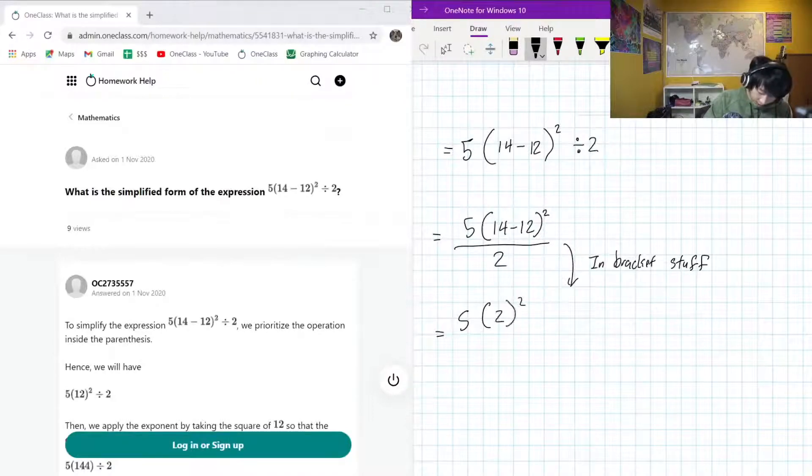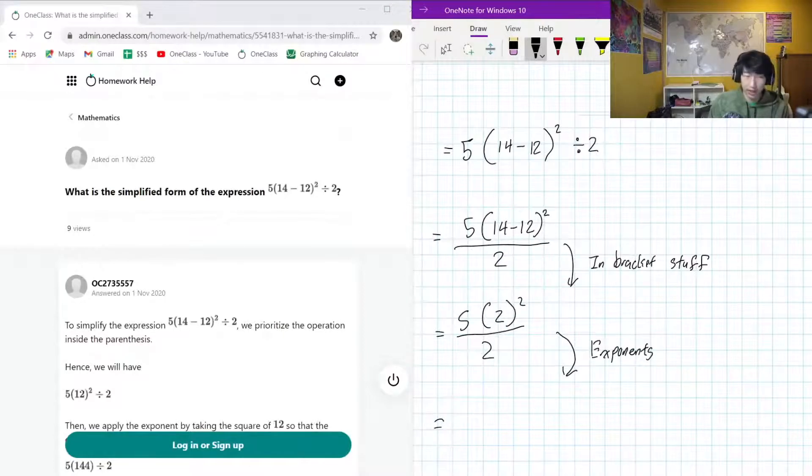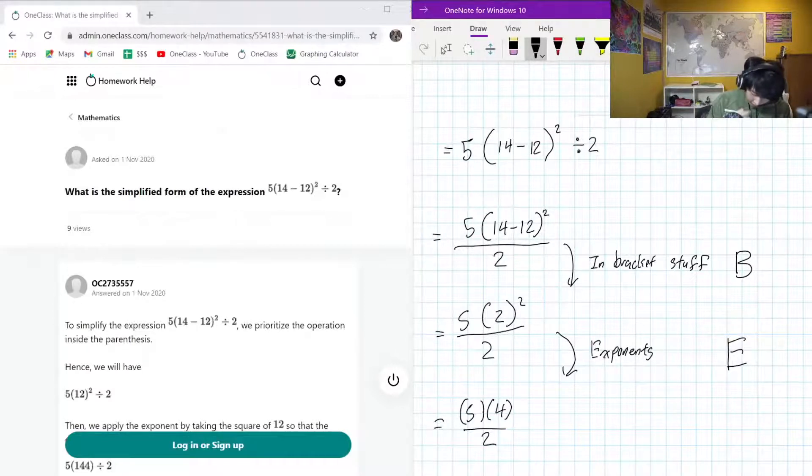That's nice. So the next step, we want to do exponents. If you look closely, you can see that we're doing the B in BEDMAS and then the E in BEDMAS. So it'll be 5 times 4 over 2, because 2 squared, well, that's got to be 4.